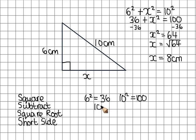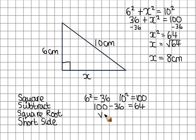Okay, take the smallest from the largest, so 100 take away 36 gives me 64. The square root of 64 is 8, so we know that x is 8 centimetres.